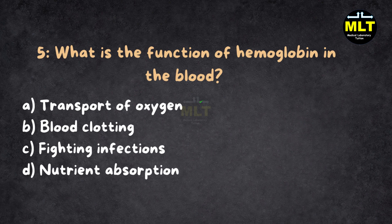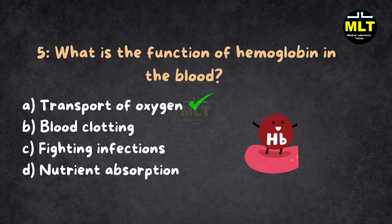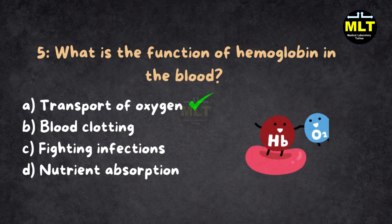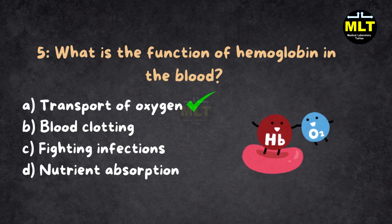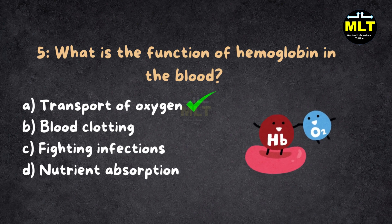Correct answer: A. Transport of oxygen. Explanation: Hemoglobin, found in RBCs, binds oxygen in the lungs and releases it to tissues. It also helps transport a small amount of carbon dioxide back to the lungs for exhalation.